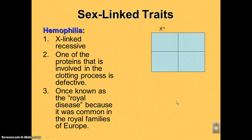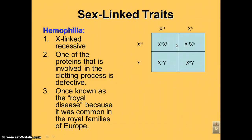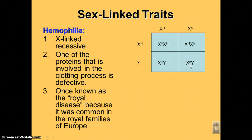This was once known as the royal disease because it was very common in European royal families. Here's the Punnett square: mom is a carrier, dad is normal. Just like the previous example, half the females will be carriers, and half the males could be hemophiliacs, giving them a one-in-four chance of having a child with hemophilia — and they're all boys because they only need to inherit one bad allele.